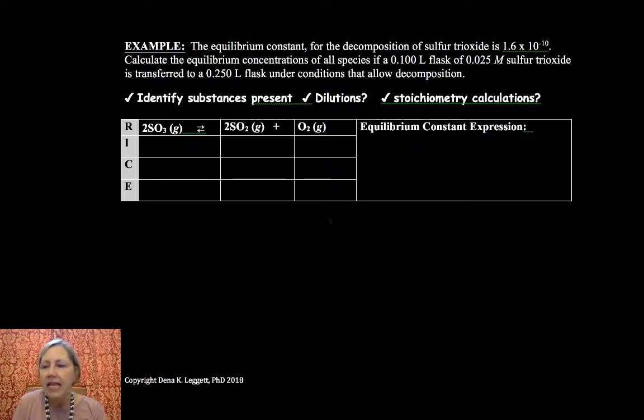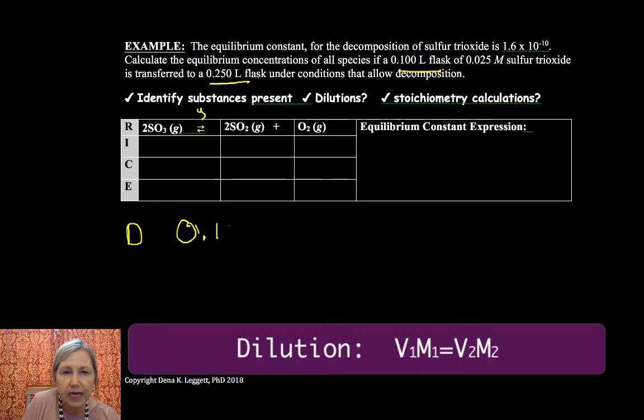So I think that's a fairly straightforward equilibrium problem. Hopefully you will, if you don't feel that right now, I think you will by the end of this chapter. Okay, now we have another one. This time we want to identify our substances present. We again have a gas phase reaction. We do have a dilution this time because we had one volume and we transferred it to another volume, so we do have to include a dilution.